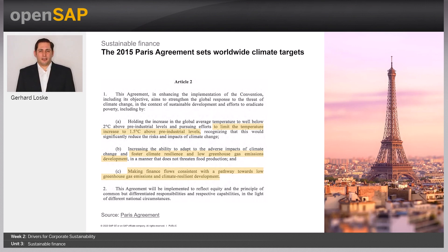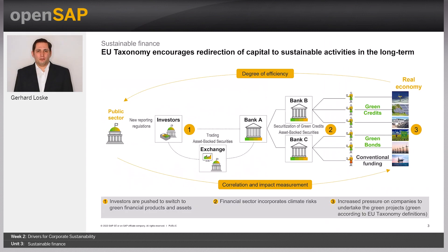There's also the topic of adapting to climate change, which is already happening. A not-so-commonly known point is that financial markets should also be considered, and financial flows should be directed to support the goals of the Paris Agreement. Regulators and authorities are currently setting up regulations that are affecting investors. Investors should now look into their portfolios, where their money is invested, and whether these investments are supporting the goals of the Paris Agreement or other environmental goals. By doing so, a kind of pressure is created on the financial market.